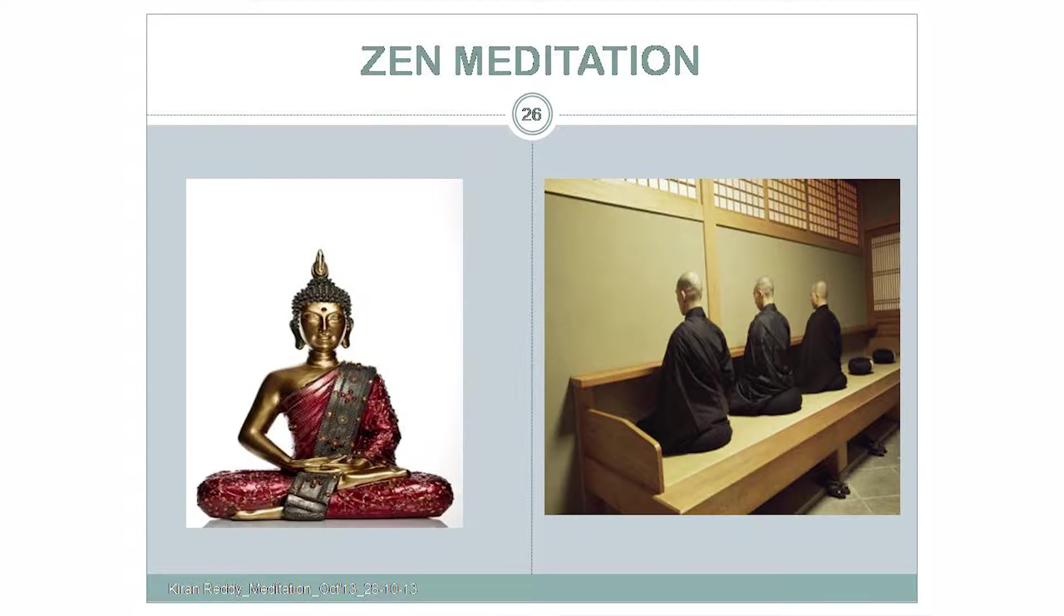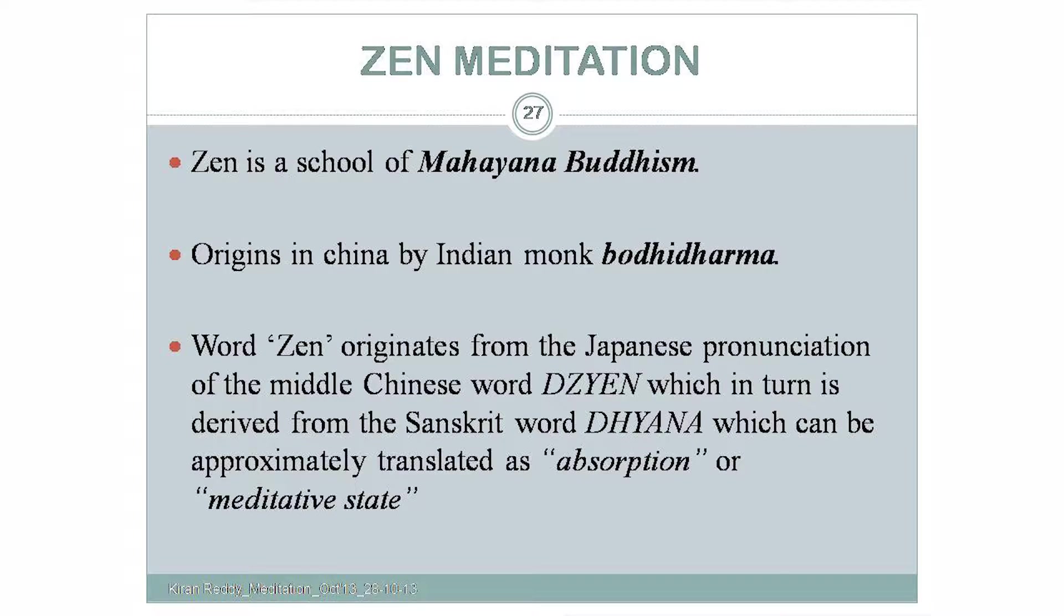Zen school of Mahayana Buddhism. Buddhist meditation is two types. One is Zen meditation, another is Vipassana meditation. A wonderful meditation is Vipassana meditation. It was based on the teachings of Buddha but it is invented by a Burman called Goenka.